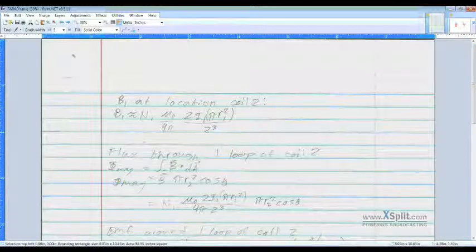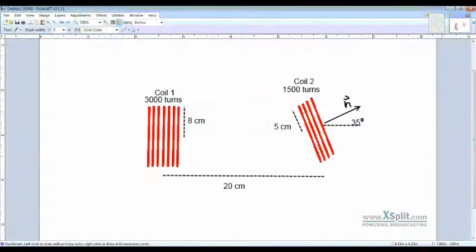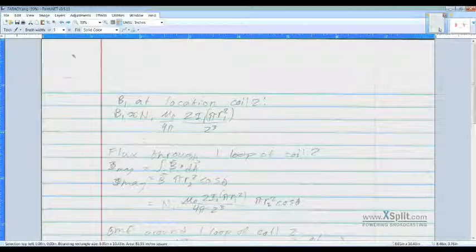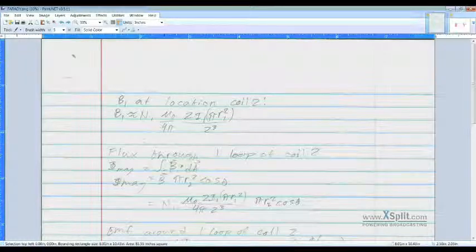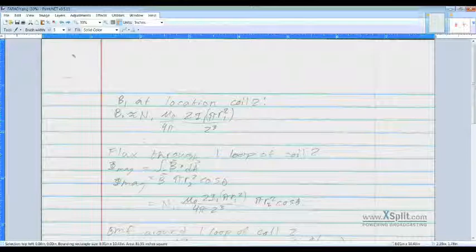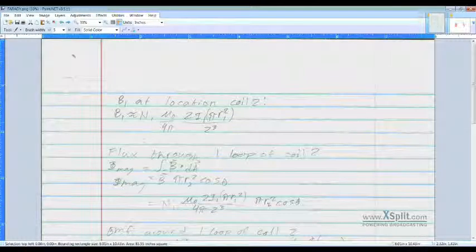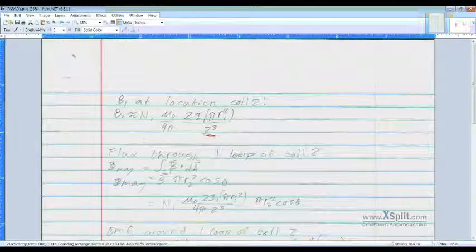So for B1 at the location of coil 2, that's the magnetic field created by this coil at coil 2. We can use the approximation for a magnetic field. And that gives us N1, because that's the number of turns, times mu naught over 4 pi times 2I1 pi R1 squared over Z cubed.